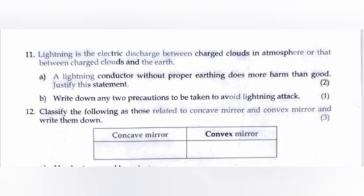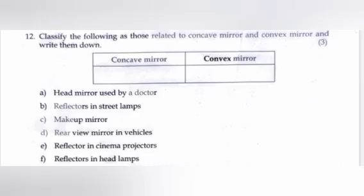Question 12. Classify the following as those related to concave mirror and convex mirror and write them down. A. Head mirrors used by doctors: Concave mirror. B. Reflectors in street lamps: Convex mirror. C. Makeup mirror: Concave mirror. D. Rear view mirror in vehicles: Convex mirror. E. Reflectors in cinema projectors: Concave mirror. F. Reflectors in headlamps: Concave mirror.